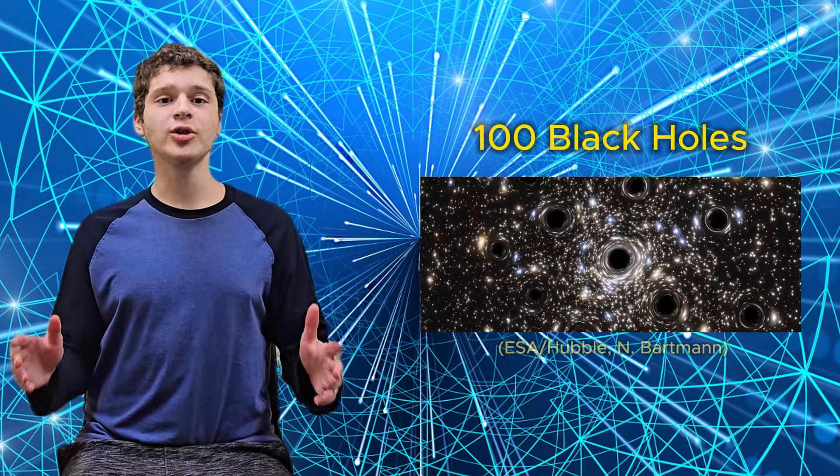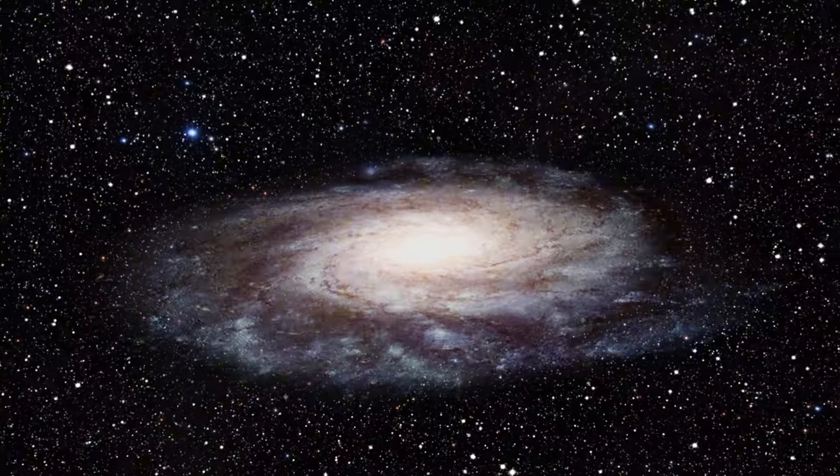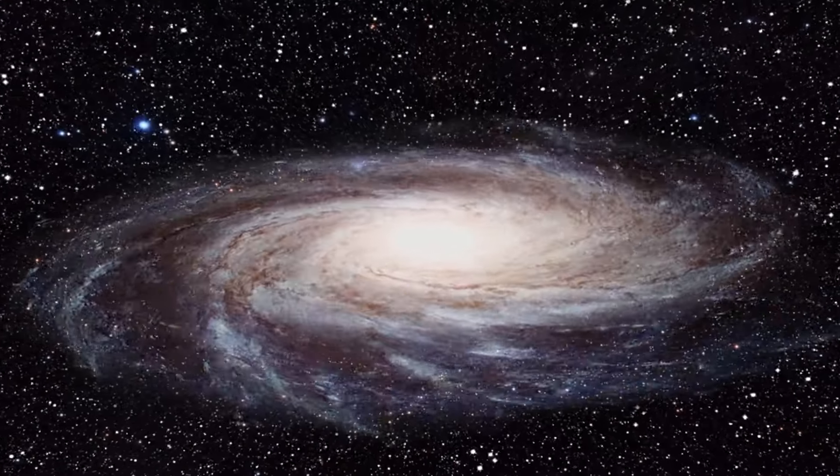What if I told you that hidden in a nearby star cluster, there could be over 100 black holes quietly shaping the universe around them? Today, we're diving into Palomar 5, a unique star cluster in our Milky Way that stretches over 30,000 light years across.